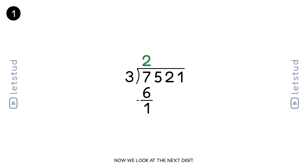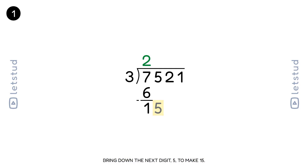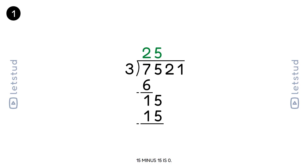Now we look at the next digit. We have a remainder of 1. Bring down the next digit, 5, to make 15. 3 fits into 15 five times. 5 times 3 is 15. 15 minus 15 is 0.